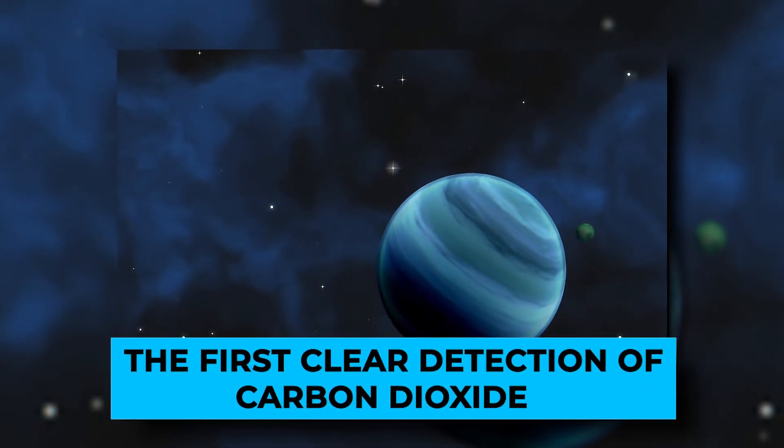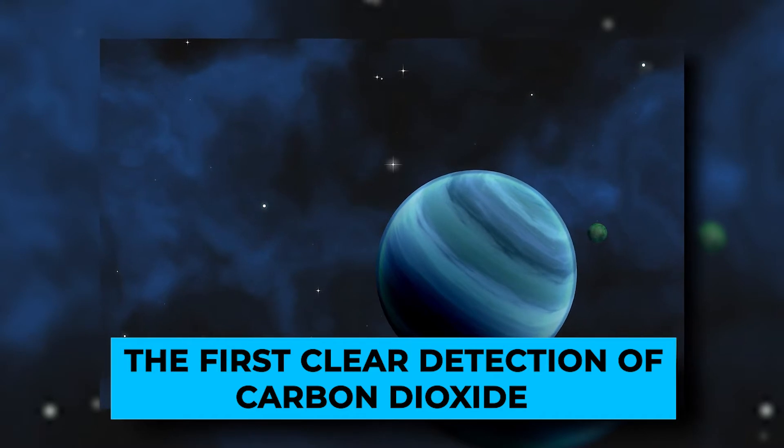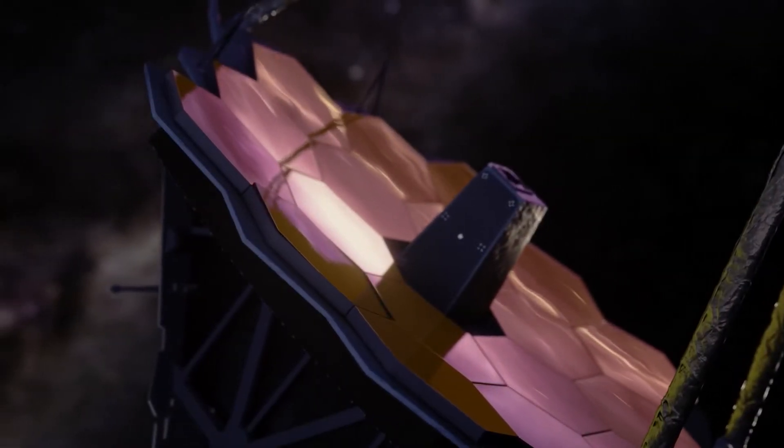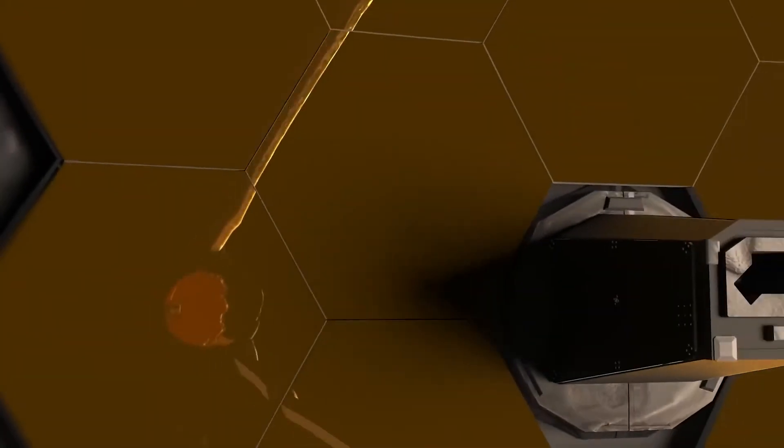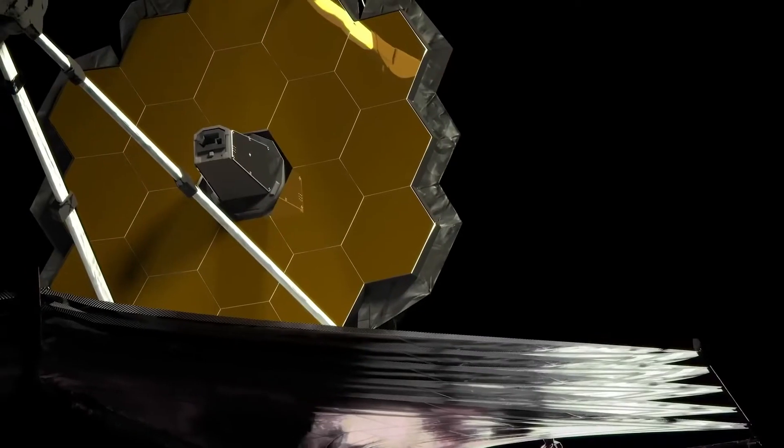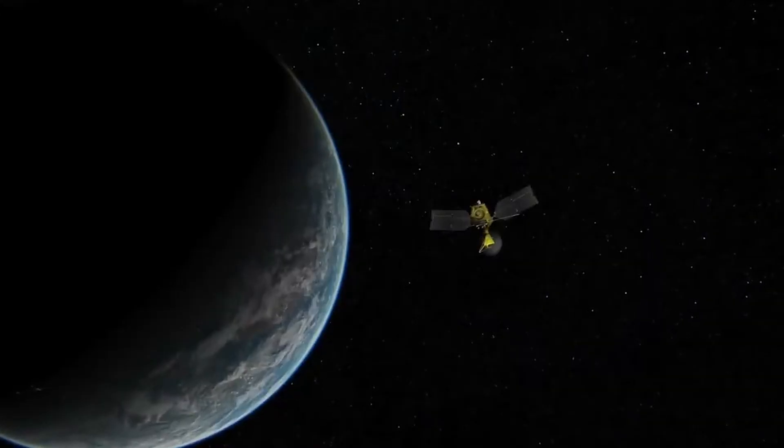Next up, let's go back to the first clear detection of carbon dioxide. The WASP-39b observations were made with Webb's near-infrared spectrograph. A small hill between 4.1 and 4.6 microns in the resulting spectrum of the exoplanet's atmosphere provides the first clear, detailed evidence for carbon dioxide ever detected in a planet outside the solar system.